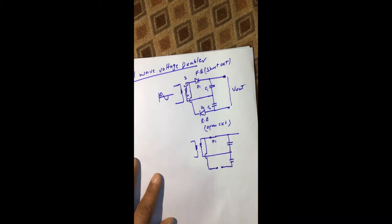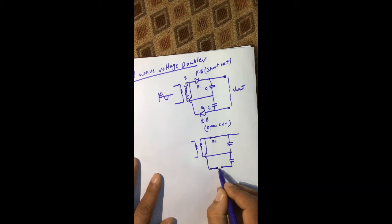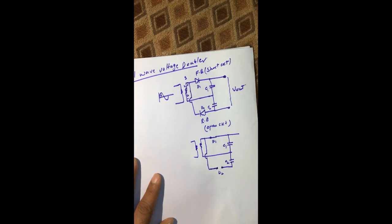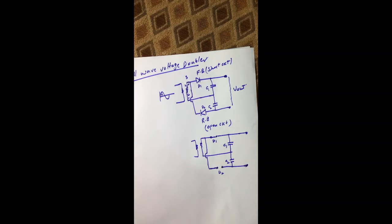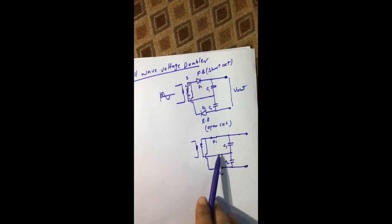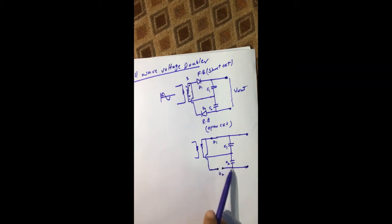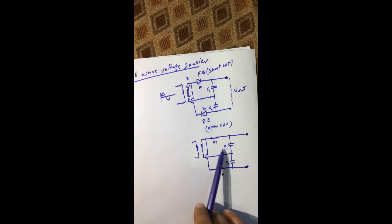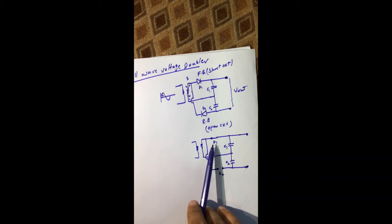Diode D2 is reverse biased so it acts like an open circuit, meaning there is no connection between those two points. We have capacitor C1, capacitor C2, and the load resistance, which is not yet applied to this circuit. Once diode D1 is forward biased, capacitor C1 will charge to its maximum value through D1, while capacitor C2 will not charge because the circuit is open.